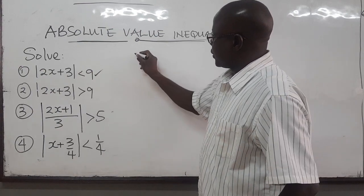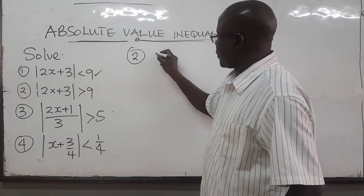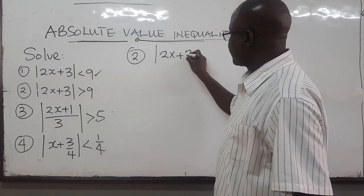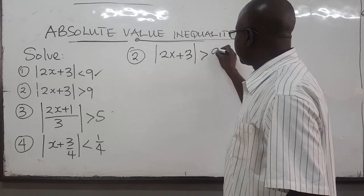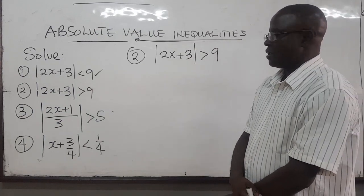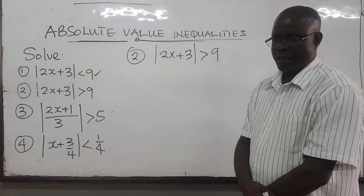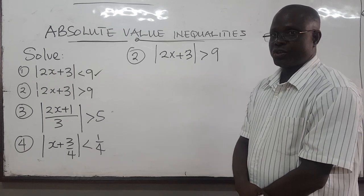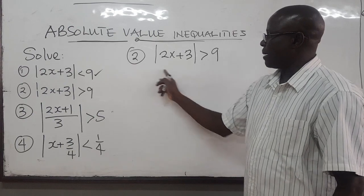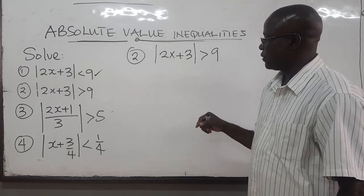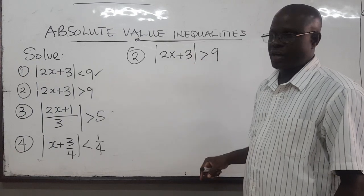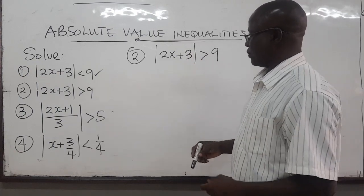So for question two, we have the absolute value of 2x plus 3 is greater than 9. We can use the simple approach of the definition of absolute value inequalities, or we can use the quadratic approach where you square both sides. So let's use Method 1.